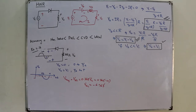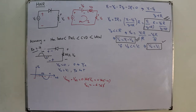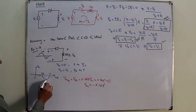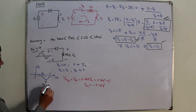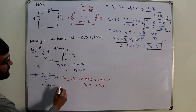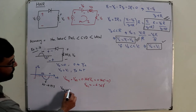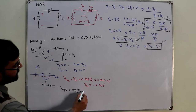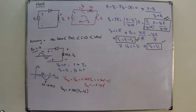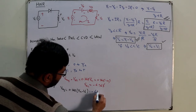Part b: replace the ideal diode with a silicon diode. The peak output drops from 20 volts to 19.3 volts due to the 0.7 volt barrier potential. The average DC value becomes 0.318 times (V_m minus V_b), which is 0.318 times (20 minus 0.7), giving negative 6.14 volts — a minor difference.